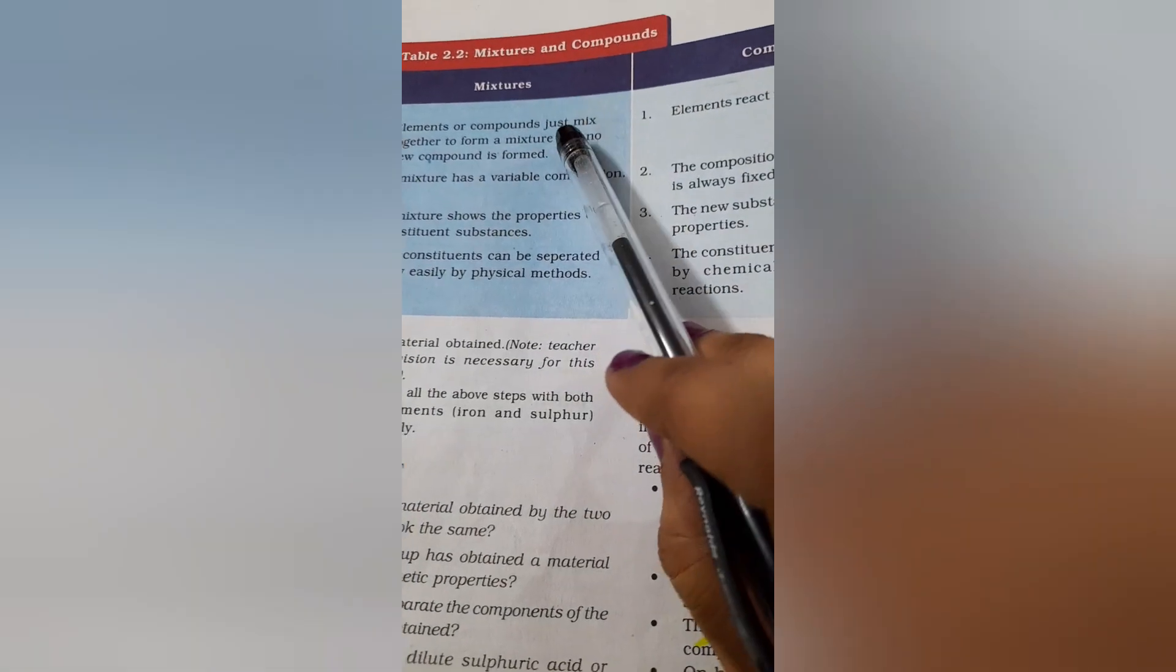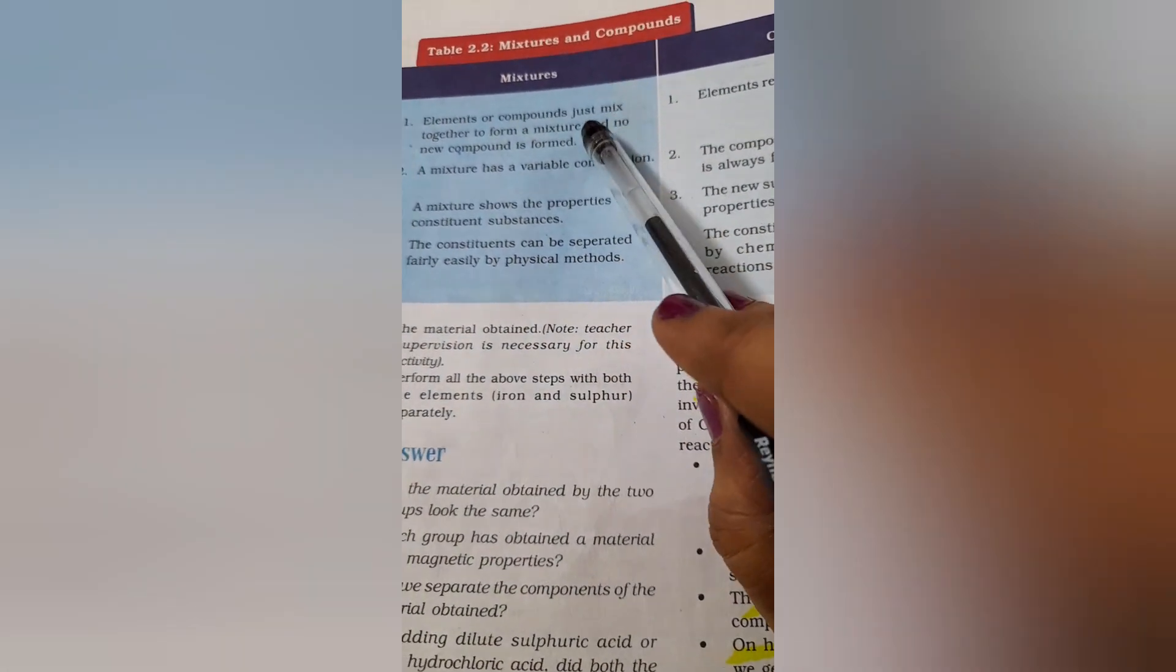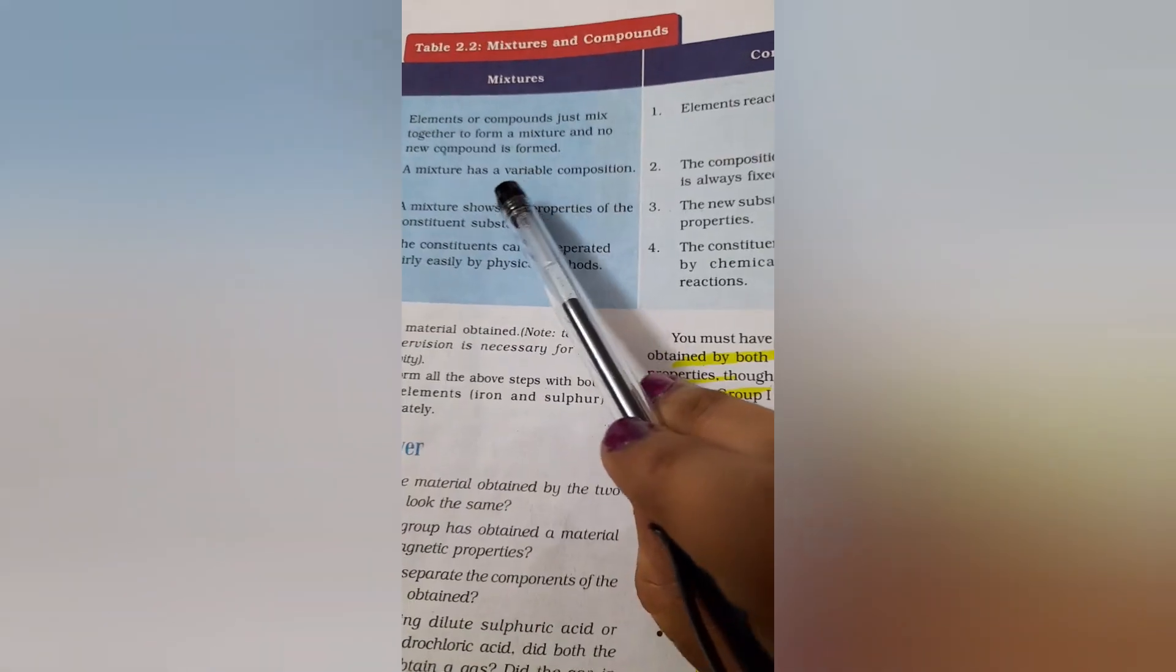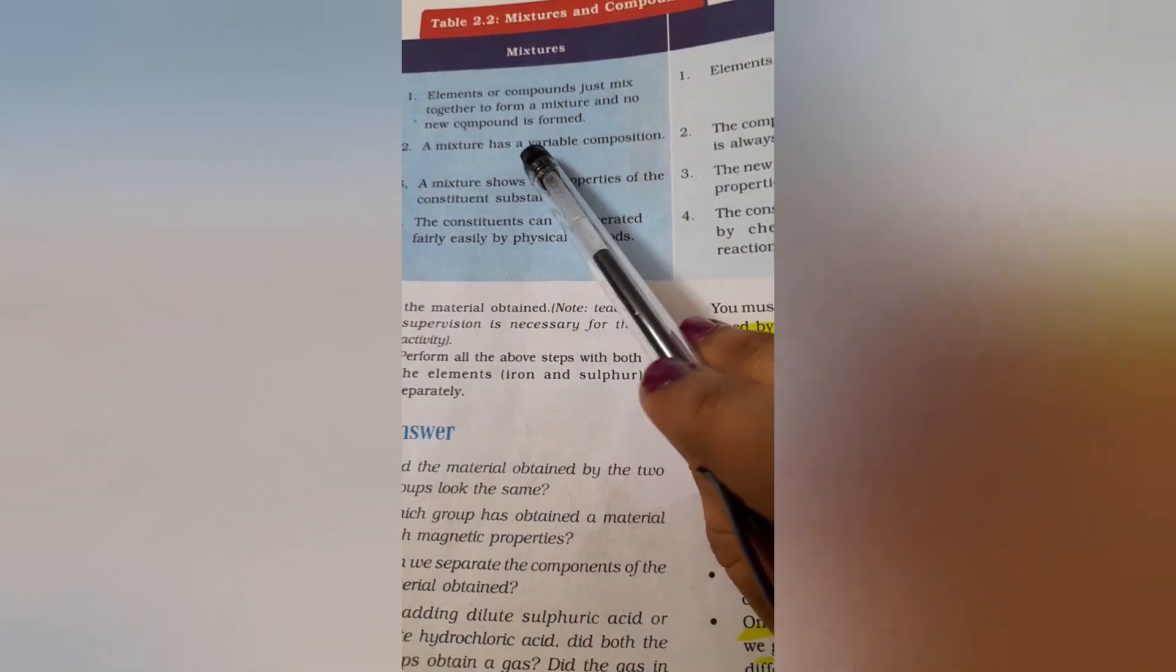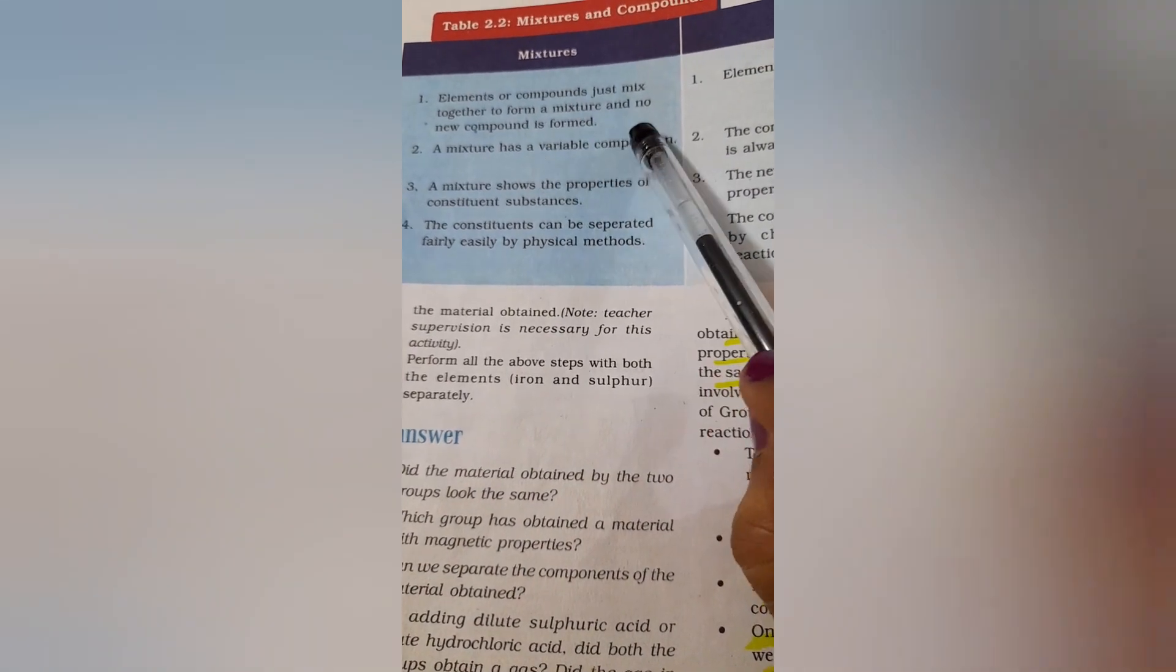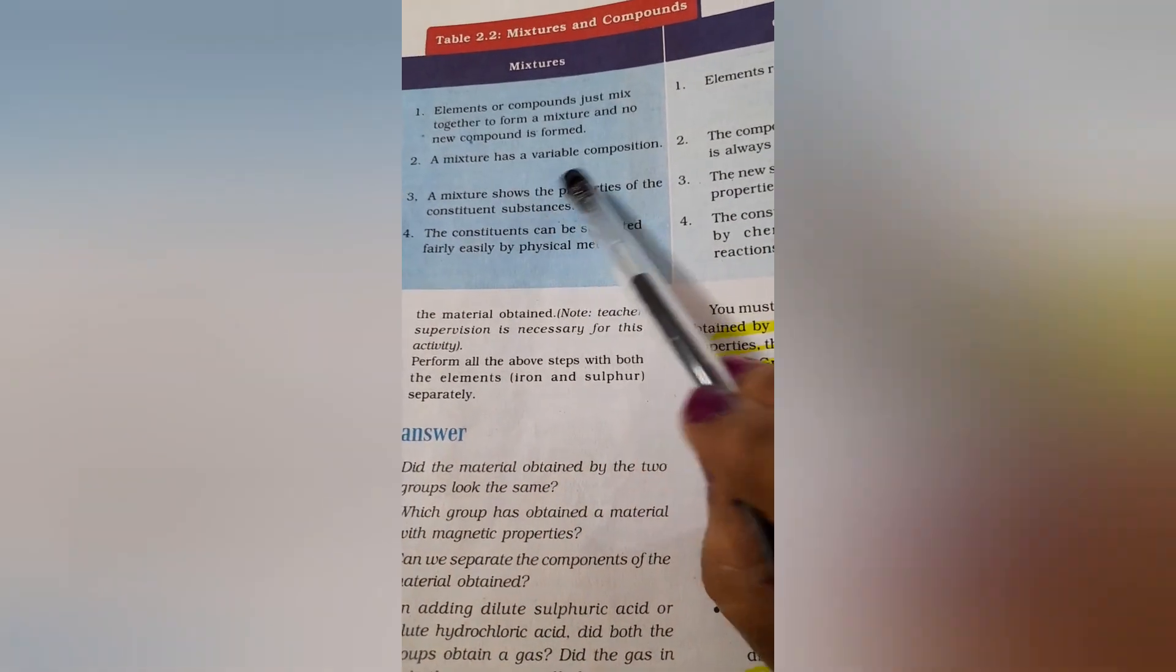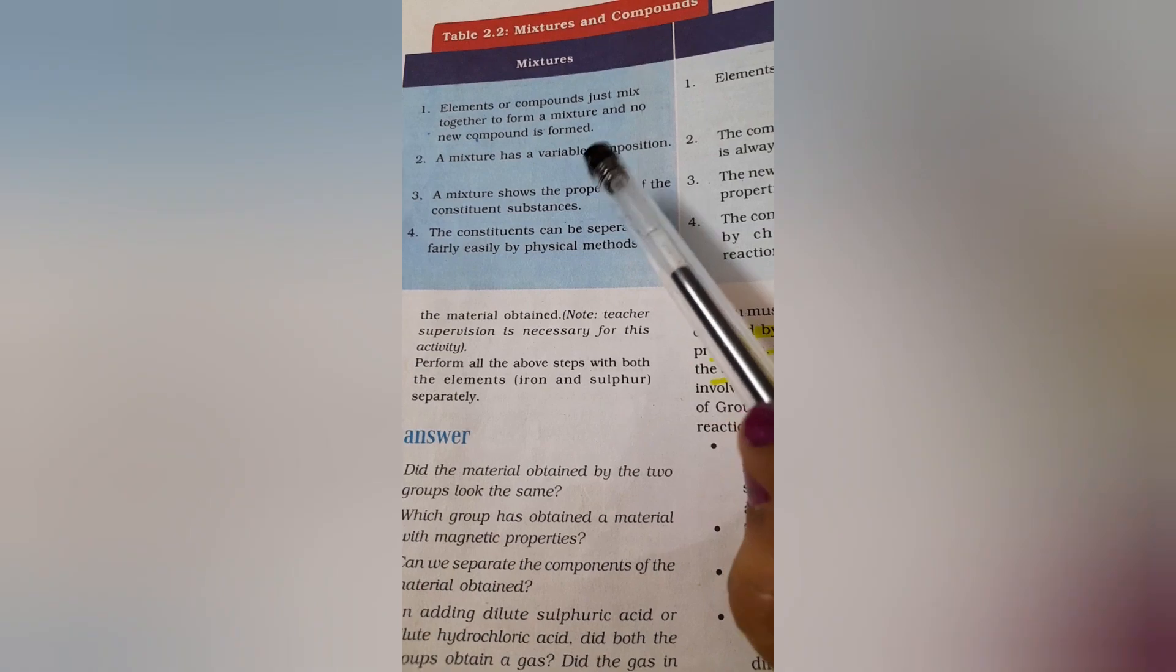Atoms combine to form molecules. Here you can see table 2.2 about mixtures and compounds. In mixtures, elements or compounds just mix together to form mixture and no new compound is formed. The mixture has variable composition because it is not same always.